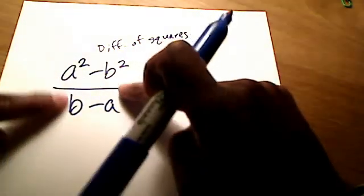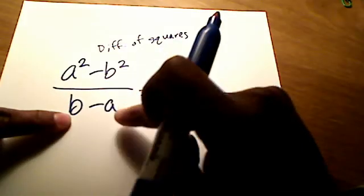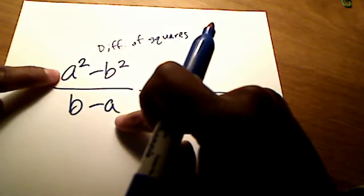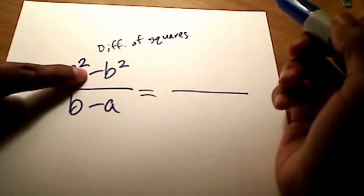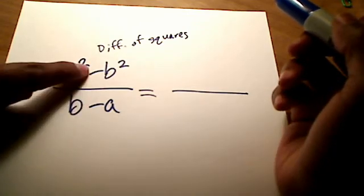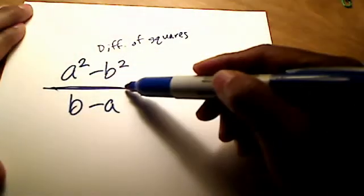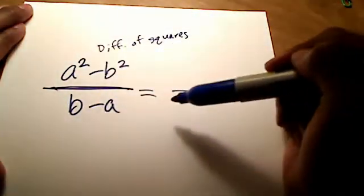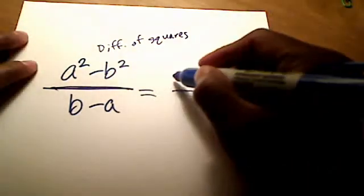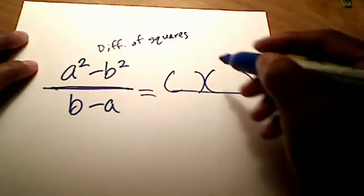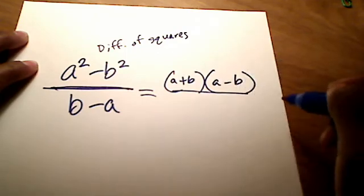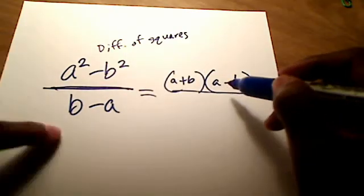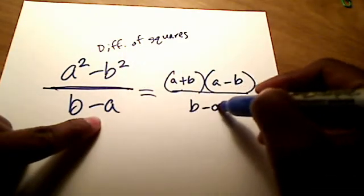Before you start crossing stuff out. There's an a on the bottom. There's some a's on top. Before you start crossing anything out, keep in mind that this is subtraction going on in both the numerator and the denominator. But this bar right here means division. And division and subtraction are not opposites. So, don't cross anything out yet. First, we have to rewrite our numerator as a plus b and a minus b. Difference of squares. My denominator just has a b minus a in it.